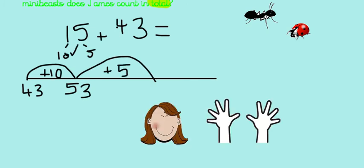Now I'm able to add on those ones. 53 on my head. Here we go: 54, 55, 56, 57, 58. Well done. So how many minibeasts are there in total? 58.